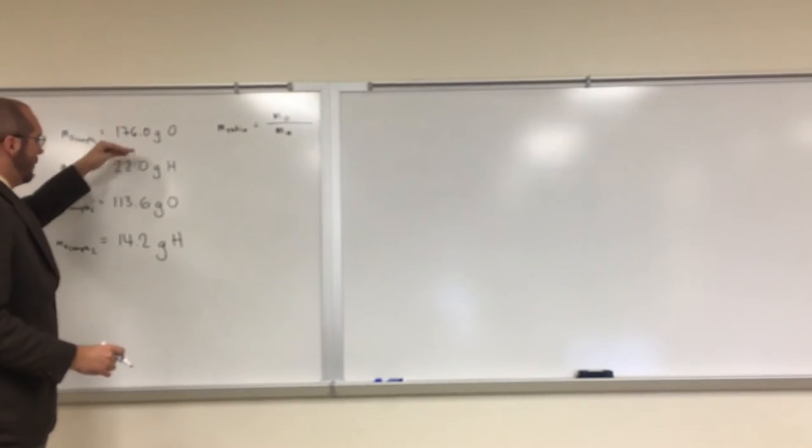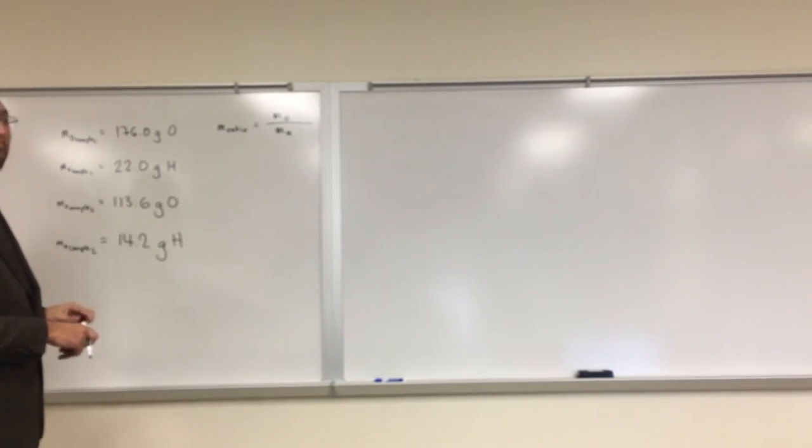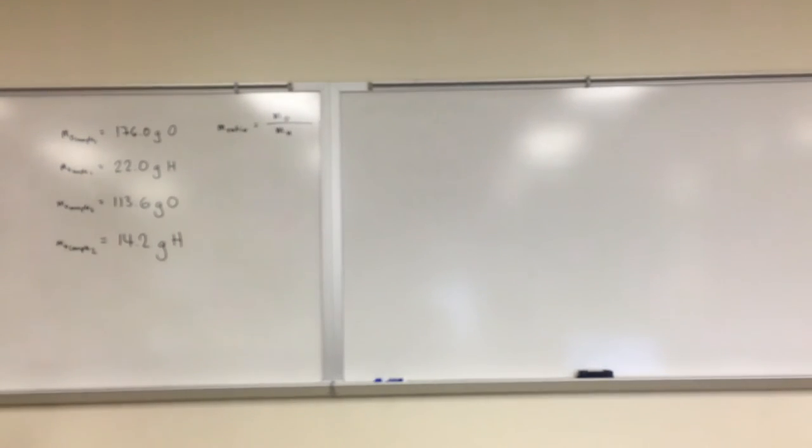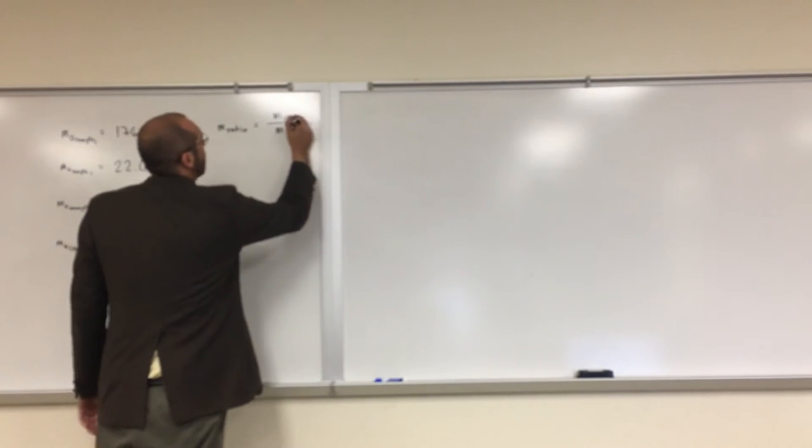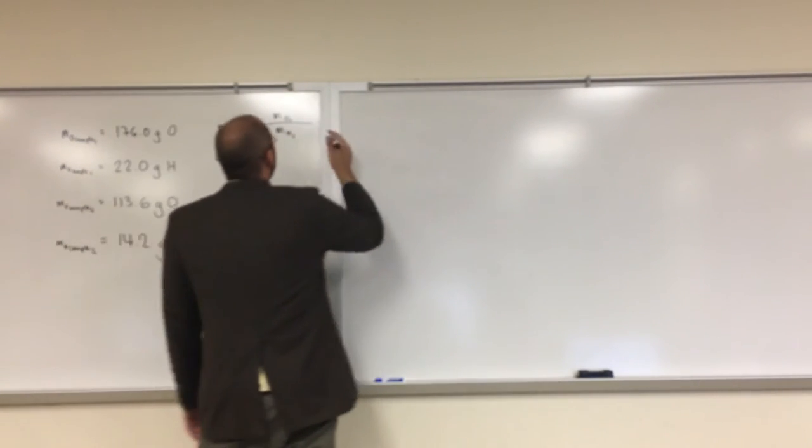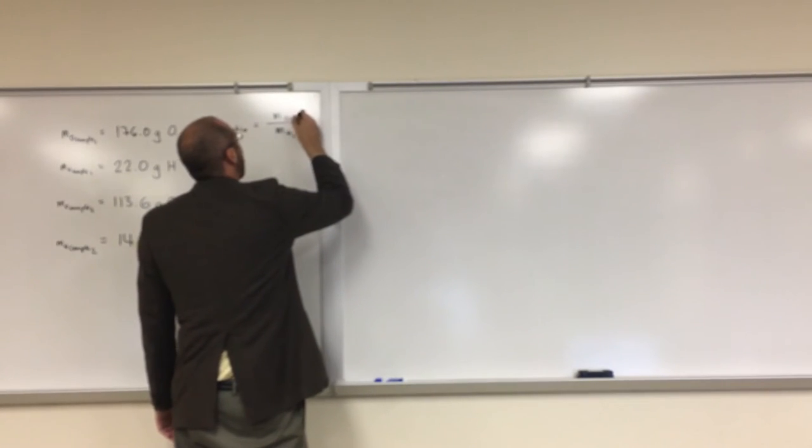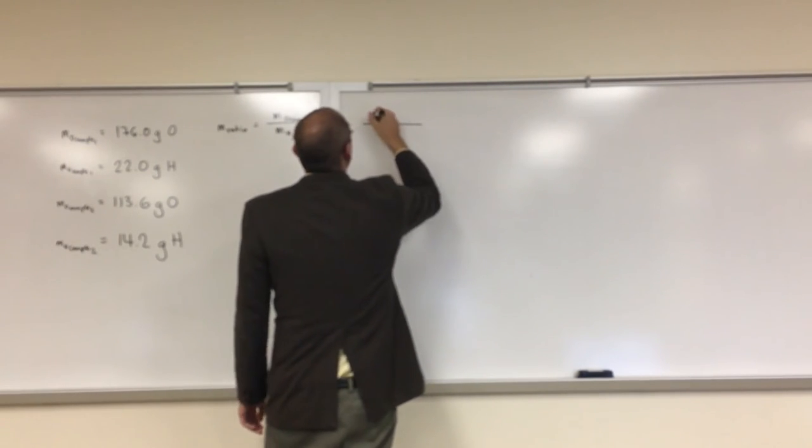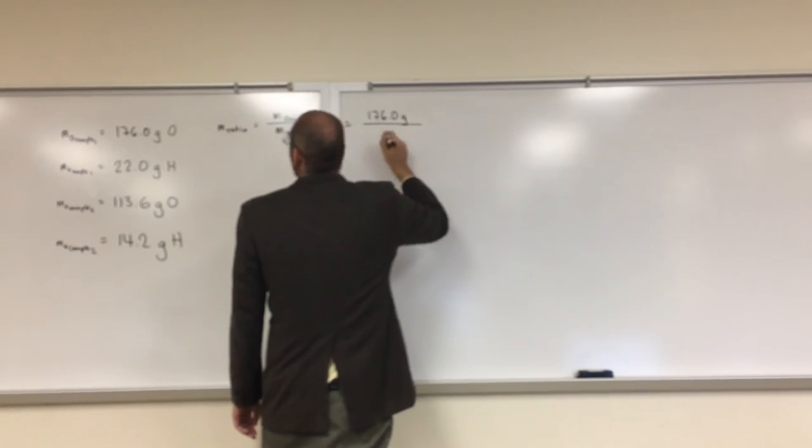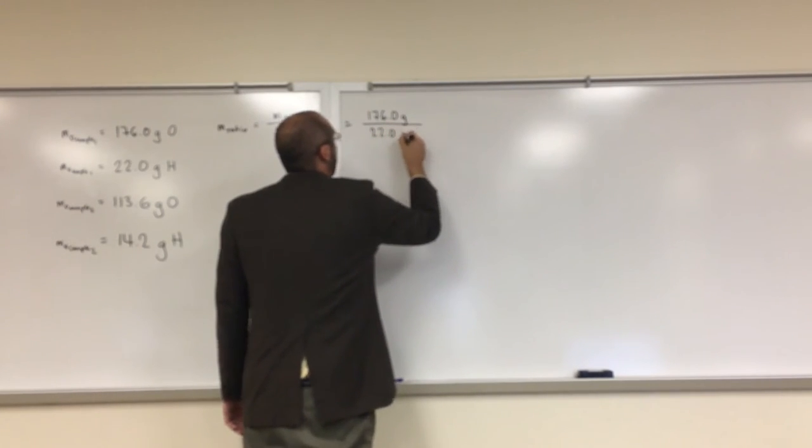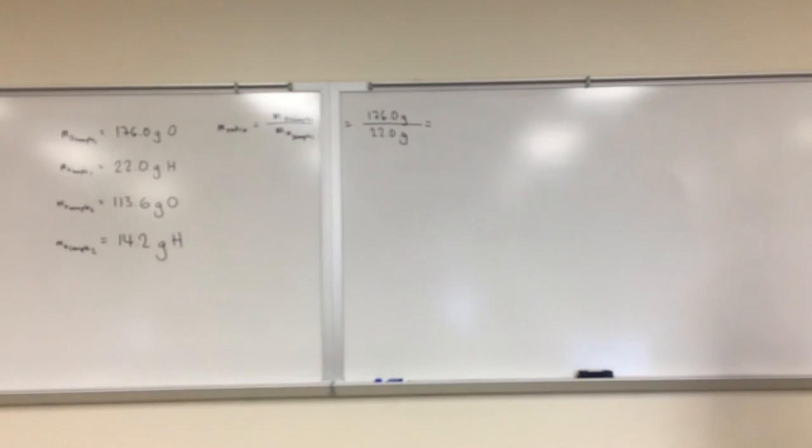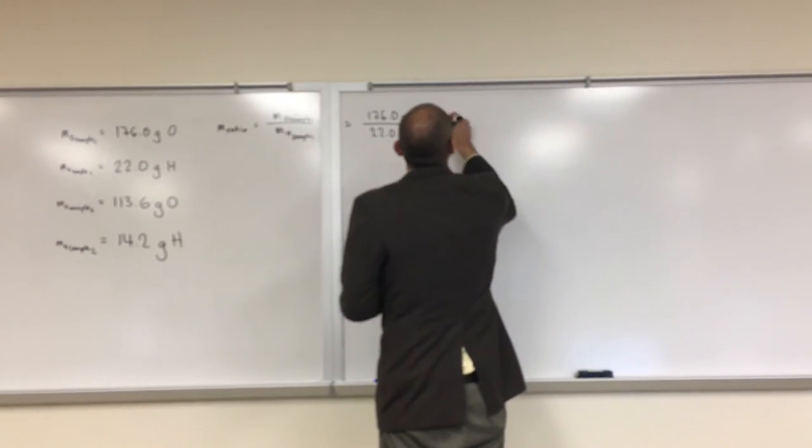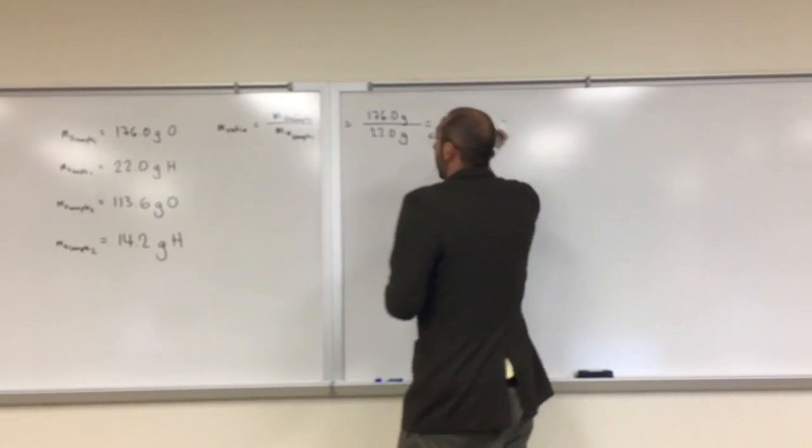Hopefully the mass ratio of this sample equals the mass ratio of this sample, and that would prove to us the law of constant composition. So the mass ratio of sample one, we get 176.0 grams divided by 22.0 grams. And hopefully we see we get 8.00 as the ratio.